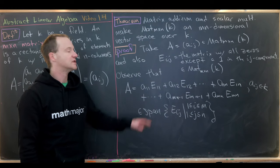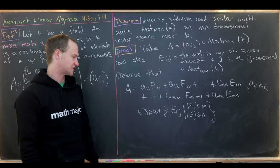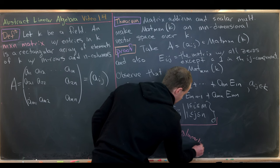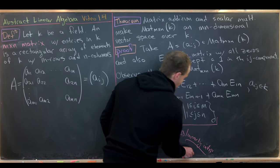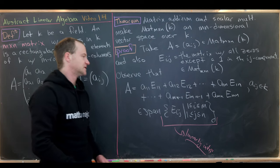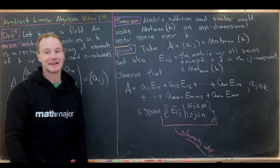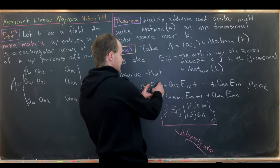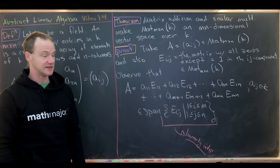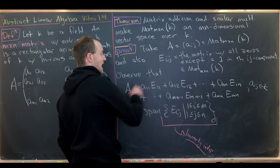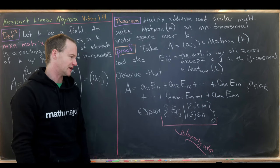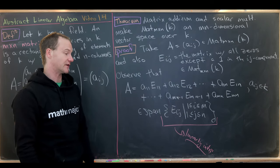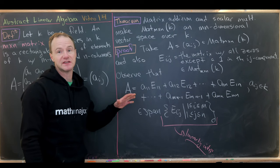To finish proving we have an M times N dimensional vector space, we need to show the set of E_IJs is linearly independent. If we take that sum and set it equal to the zero matrix, because there's no interaction between any of the E_IJs, all the scalar coefficients AIJ must be zero — which gives us linear independence. As a good exercise, write down all the details, but it comes pretty quickly.